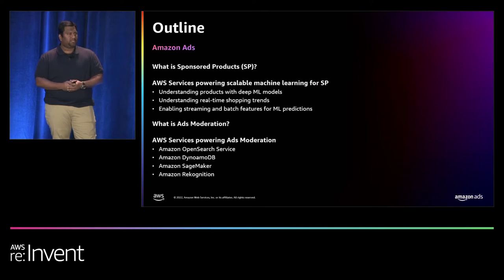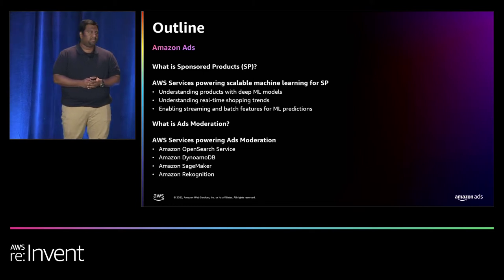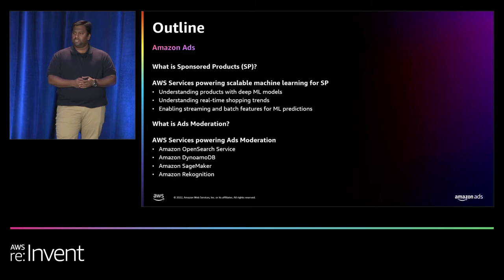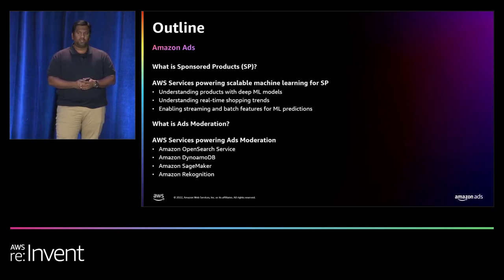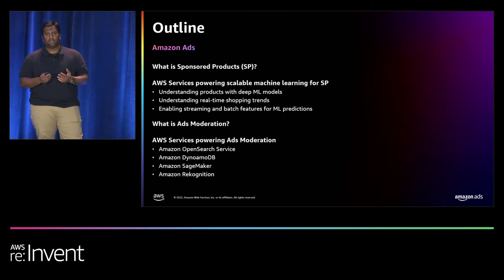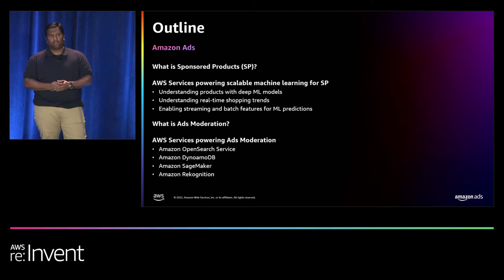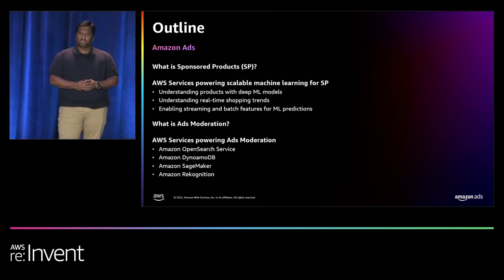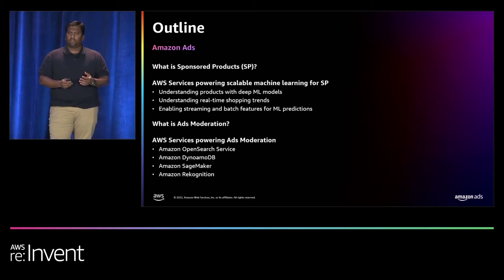In our session today, I'll talk about who Amazon Ads is and why we at AWS consider them a key strategic partner. I'll also introduce the two teams whose journey we are presenting here today. First, Shengwa will come and talk about what sponsored products are, how his team developed deep learning models to understand these products, how his team identifies trends in the marketplace, and how they use this to make predictions that help customers as they shop on Amazon.com. He'll also share challenges and creative, out-of-the-box solutions using AWS services, along with a lot of insights and lessons learned.